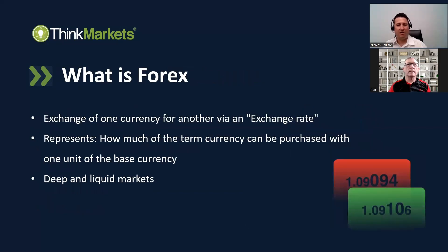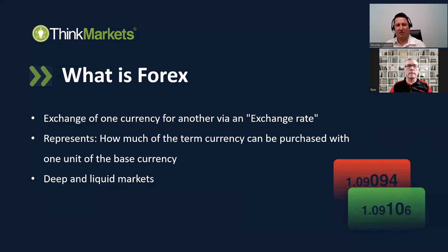Forex is the exchange of one currency for another via the exchange rate. The exchange rate is essentially a bid and offer. It represents the amount of the term currency that can be purchased with one unit of the base currency. For example, in AUD/USD, AUD is the base currency and USD is the term currency.